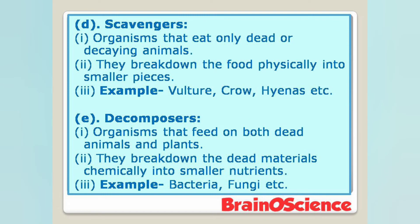D. Scavengers. Point 1: Scavengers are organisms that eat only dead or decaying animals. Point 2: They break down food physically into smaller pieces. Examples: vulture, crow, hyenas, etc.